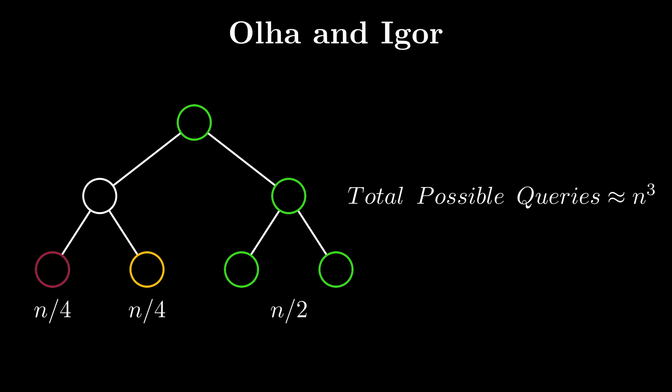Again, for this node to be an answer, we need u, v, and w to be in three different groups. So we have n by 2 times n by 4 times n by 4 different ways of selecting such triplets, and then 3 factorial ways of permuting it about.